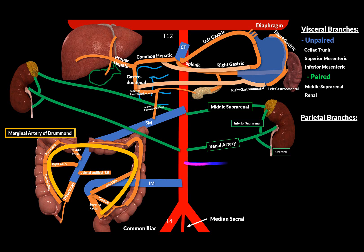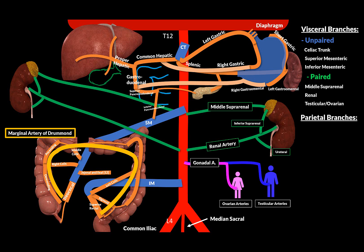The last paired visceral branch are the gonadal arteries. In females they're called the ovarian arteries because they supply the ovaries, but in males they're called the testicular arteries for the testis. These gonadal arteries also give off ureteral branches, but this time they supply the middle third of the ureter.